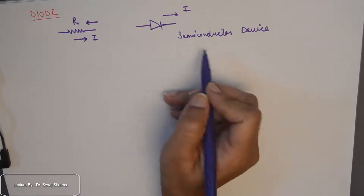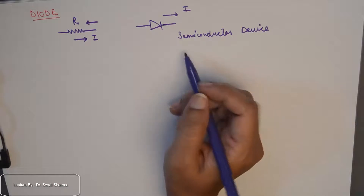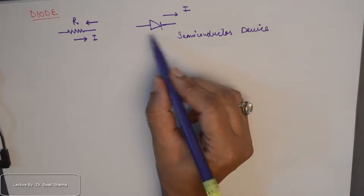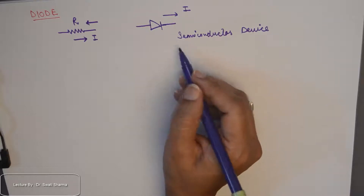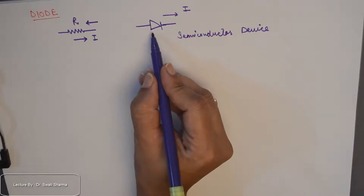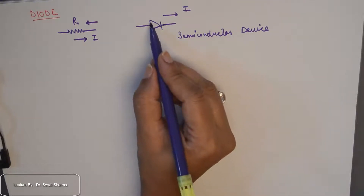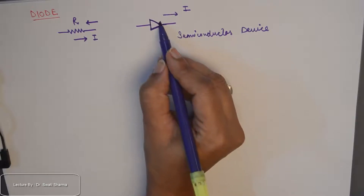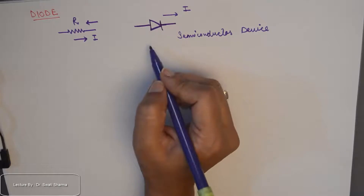A diode can be defined as a semiconductor device which allows current flow in only one direction. The direction of the arrow or triangular symbol in the diode symbol shows the direction of flow of current in a diode.